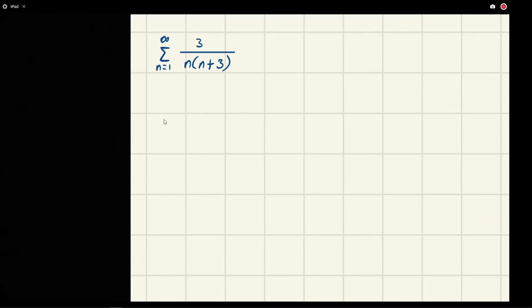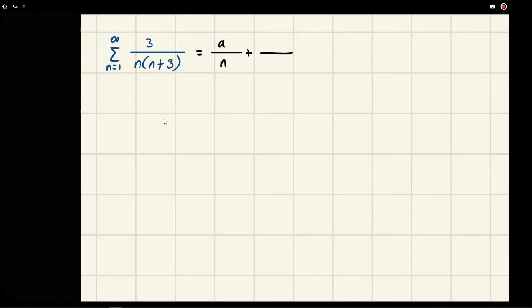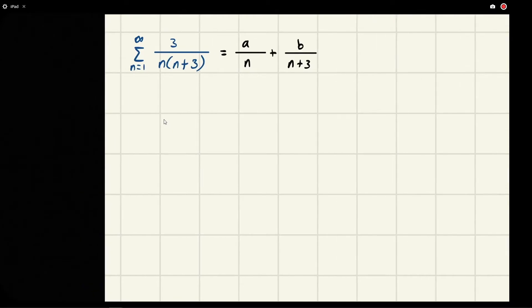So we know that the partial fraction of this thing is going to be something we'll call a over n plus something else over n plus 3, and then that one we'll just call b. And if we want to find a and b, there's actually a really easy way to do this.